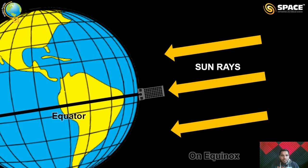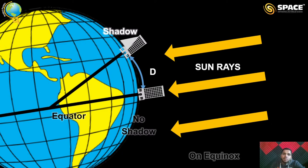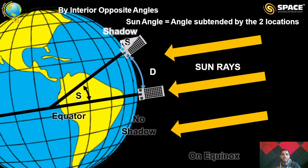On the day of equinox, if there is a place on the equator with no shadow and another place at some distance, that place will form a shadow. The angle made by the shadow with a building — I call it the sun angle — using the property of alternate interior angles, this sun angle is equivalent to the angle formed by the two lines joining the center of Earth. So the sun angle formed at distance D equals the angle subtended by the two locations at the center of Earth.